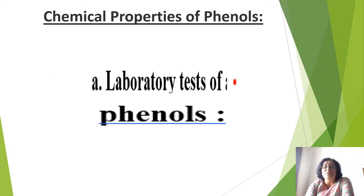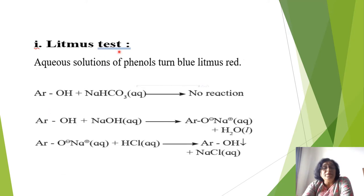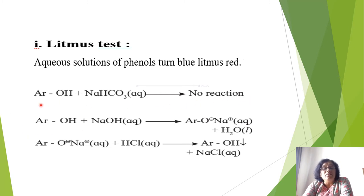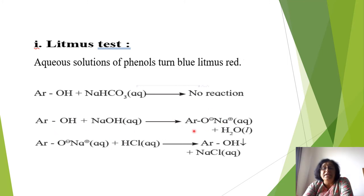Laboratory test of phenol — litmus test: an aqueous solution of phenol turns blue litmus red. Phenol does not react with saturated sodium bicarbonate, showing it is not a strong acid. However, phenol reacts with NaOH to give salt and water — the O–H bond cleaves, H combines with OH⁻ to form water, and sodium phenoxide (salt) is formed. When sodium phenoxide is reacted with HCl, phenol and NaCl are recovered.